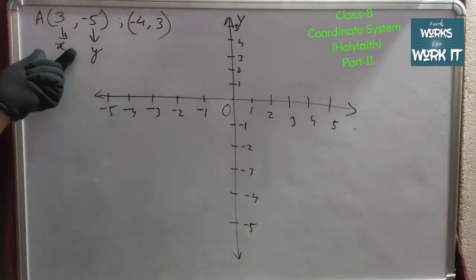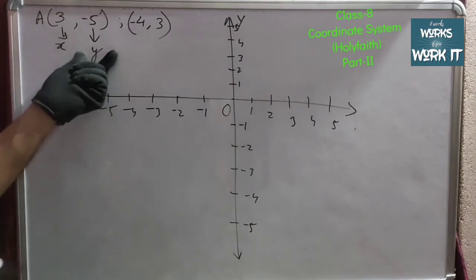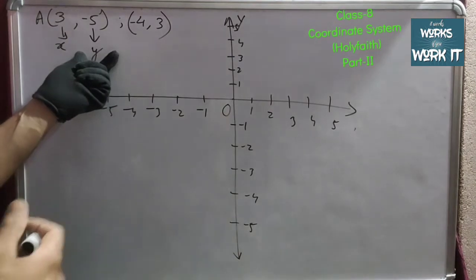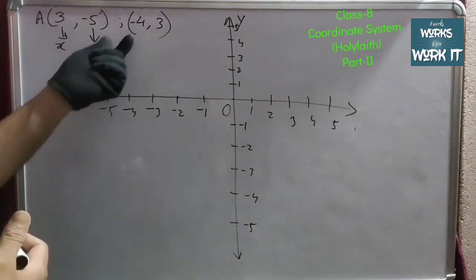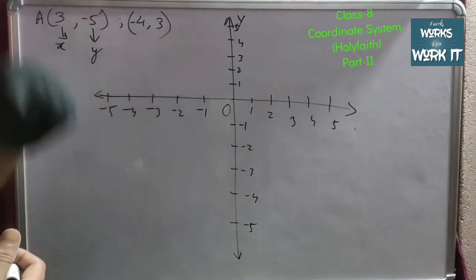The first numerical can be said as abscissa and the second one can be said as ordinate, that we have already done in the earlier video. This one is for x-axis and this one is for y-axis.